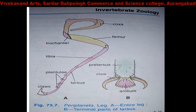The femur is followed by a long and fairly thick tibia region. The tibia bears stout bristles and tibial spurs.